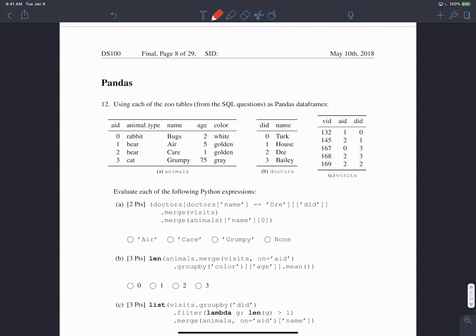We're filtering from the doctors table only the doctors whose name is Dre, which is that record. We're taking only the doctor ID column and merging it with visits. We'll merge automatically based on doctor ID, so we'll merge with just the record I just highlighted because that's the only one in visits where the doctor ID is two.